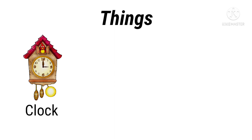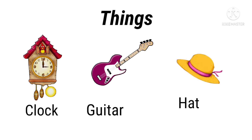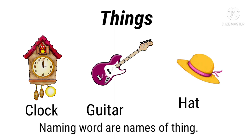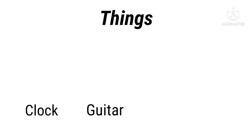For example, clock, guitar, hat — these are naming words for different things. So we can say that naming words are names of things.